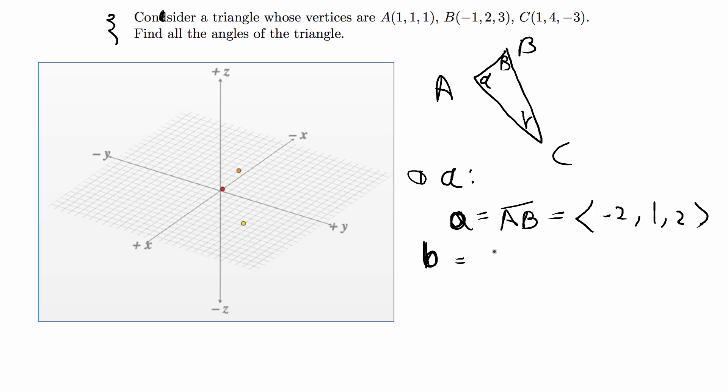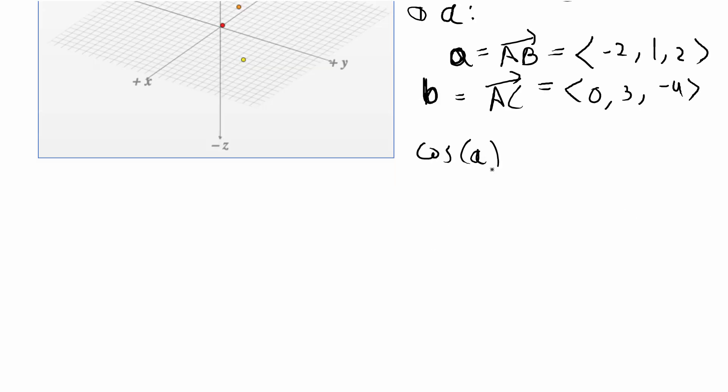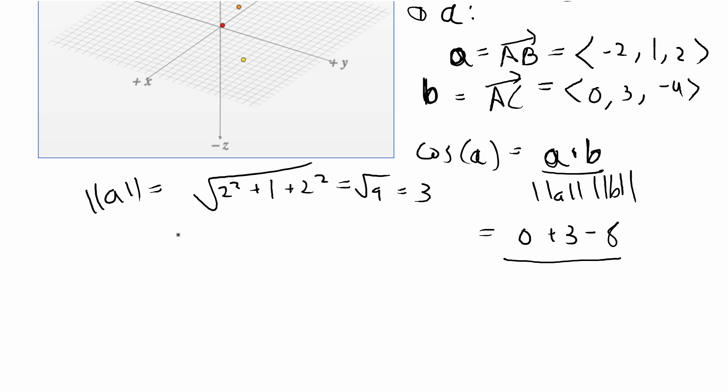And then I'm going to call vector b AC and I'm doing it in the same direction. So that gives me ⟨0, 3, -4⟩. If I do the cosine of alpha is equal to the dot product over the magnitudes, then the dot product is going to be 0 plus 3 minus 8 over and then the magnitude of a is going to be the square root of each part's square. So that's going to be 2² + 1² + 2², which is equal to the square root of 9, which is equal to 3.